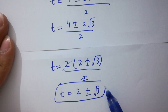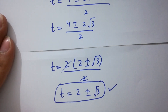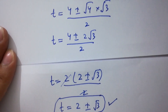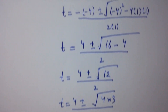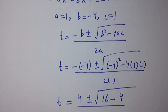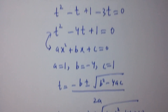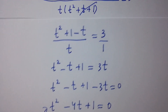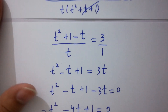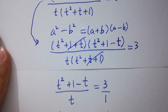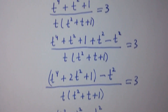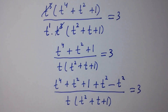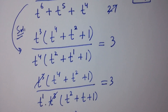So the value of t is 2 ± √3. Thanks for watching this video. Please subscribe to this channel to get notifications of new videos, and don't forget to share these videos with your classmates and friends. You can also visit the playlist of this channel to learn more.